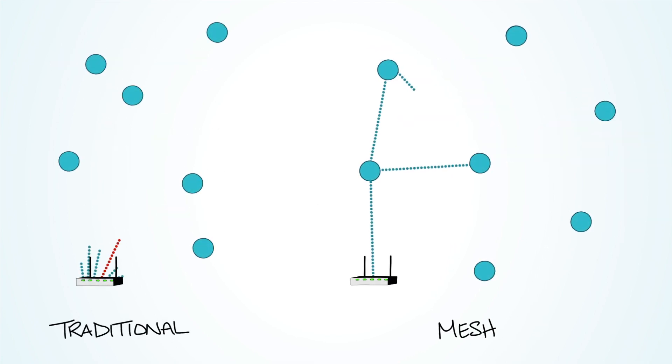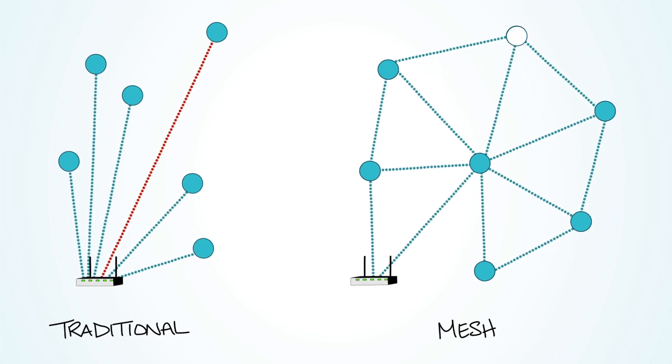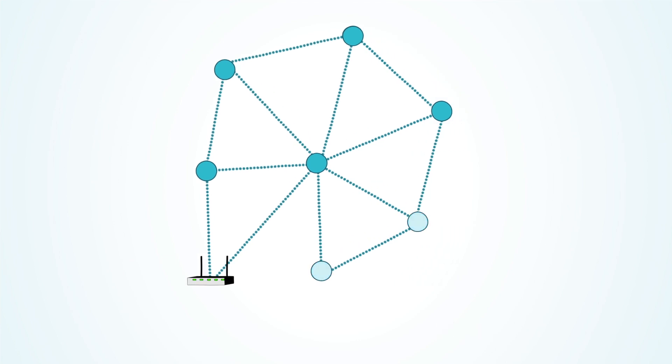Wi-Fi mesh helps extend range by creating a decentralized and distributed network of devices. Each device communicates with one another to form an interconnected mesh where traffic is relayed through multiple nodes to the destination.